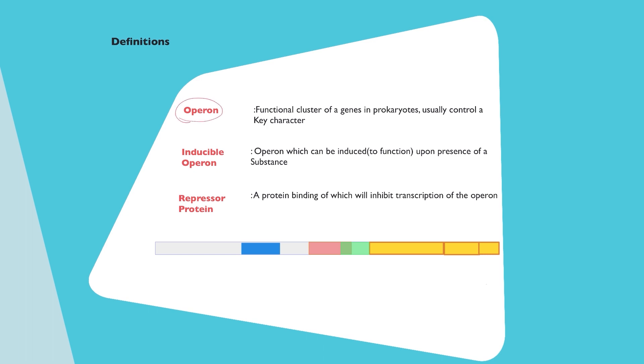So let's get right into first a few definitions. What is an operon after all? An operon is simply a cluster of genes and this cluster of genes will be controlling a key character.